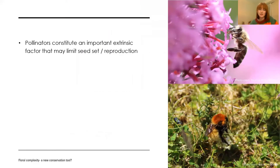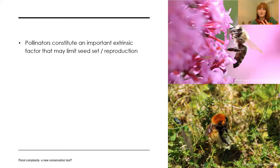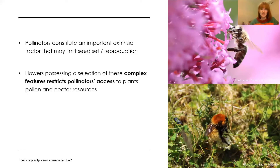Pollinators are an important extrinsic factor influencing plant vulnerability. Many plants rely on animal pollination in order to set seeds and reproduce. In a habitat or region where pollinators are in decline, that could significantly affect certain plant species if they solely rely on animal pollination, because they're just not getting that pollination and reproduction. Some flowers possess a selection of these complex features that restrict a pollinator's access to the plant's pollen and nectar.